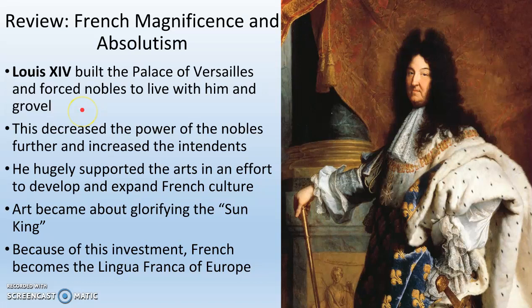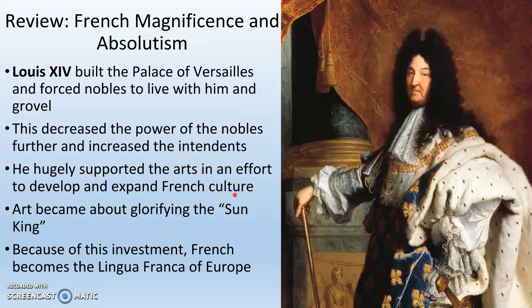Louis XIV is the symbol of the absolute monarch. He built the Palace of Versailles. He forced the nobles to live with him. He decreased the power of the nobles. He supported the arts. He became the Sun King. And French became the lingua franca of Europe. So Louis XIV is the ideal absolute monarch.